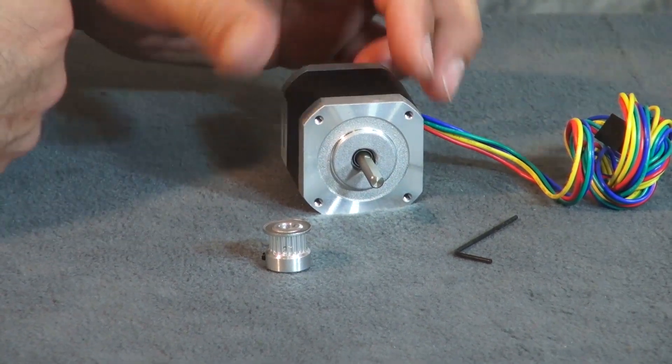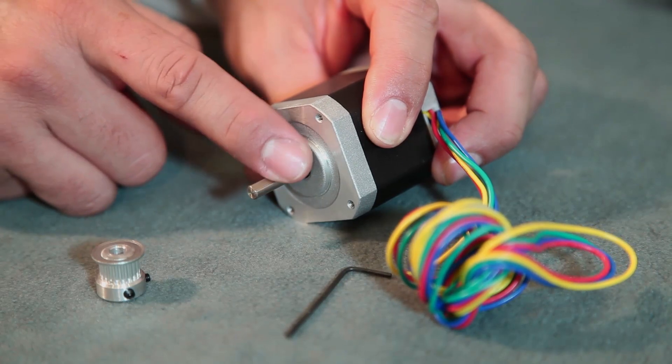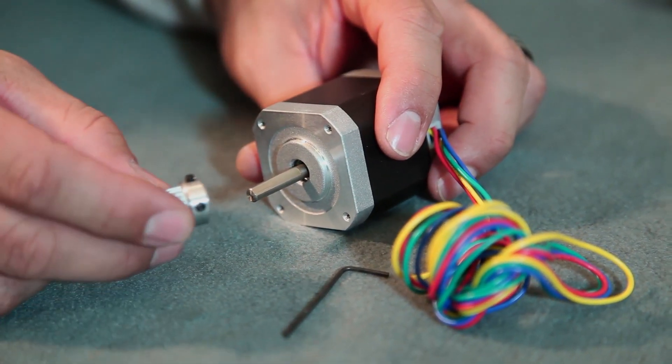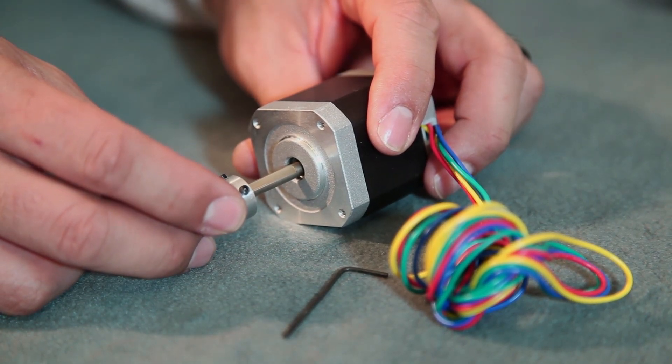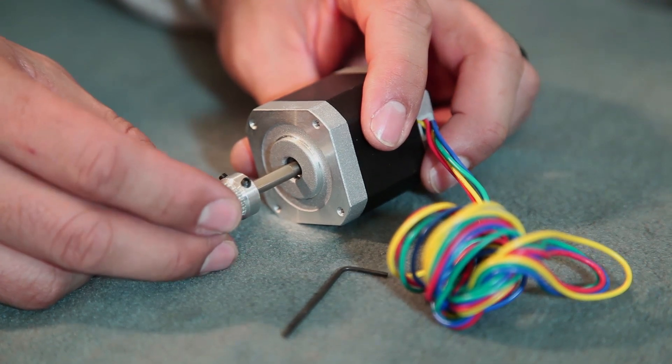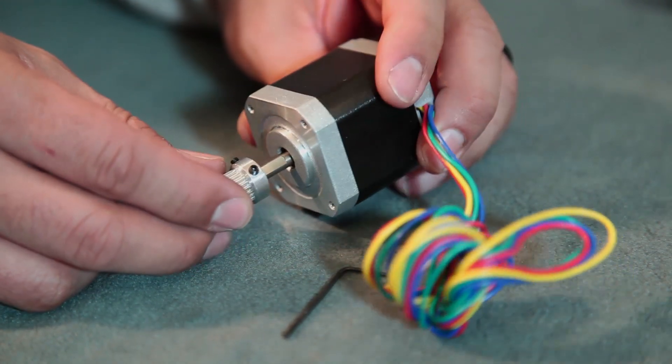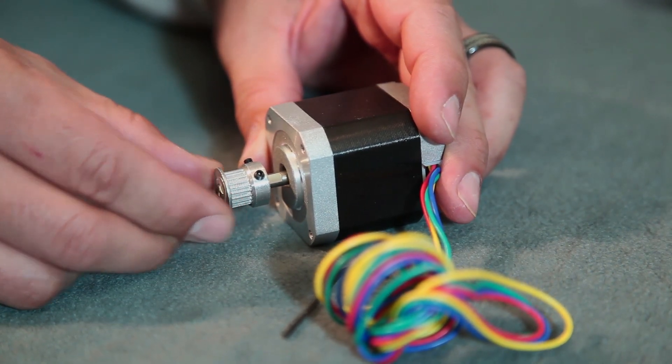Now for the stepper motor assembly. You'll notice on the stepper motor shaft there is a flat side. When you get the gear in there, you want to make sure that one of the allen screws lines up with that flat side of the shaft when you push it in.